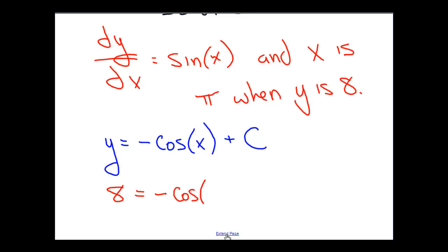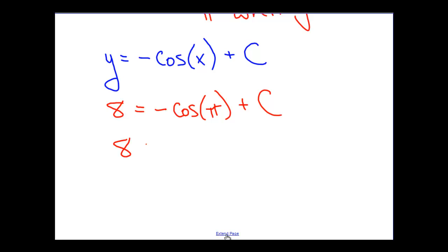So we can simply have this particular expression here. 8 must equal minus cosine of pi plus c. But everybody here knows what the cosine of pi is. Pi is the same as 180 degrees. So here we have minus and minus 1 plus c must equal 8.